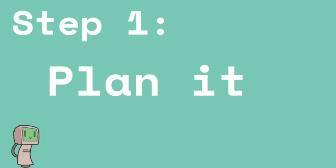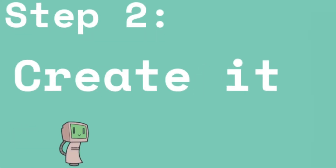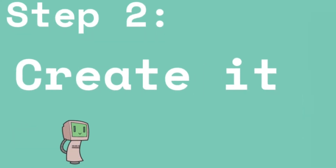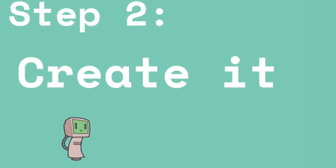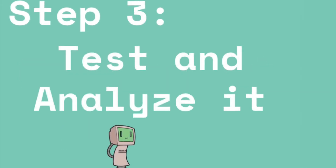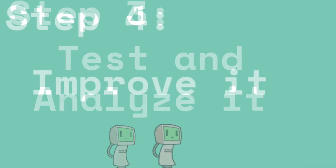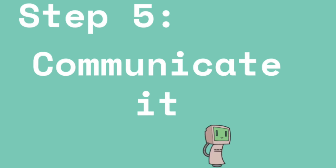Step one: plan it — make a rough draft of what you want your art piece to look like. Step two: create it — start drawing it out. Step three: test and analyze — see what doesn't look right or erase any mistakes you've made. Step four: improve or fix your mistakes. And finally, step five: communicate — share your art with your friends and family.